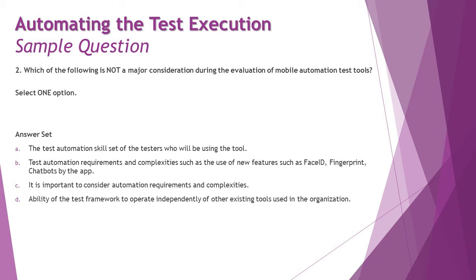Option B: the test automation requirements and complexities, such as use of new features like face ID, fingerprint, or chatbot by the app. Yes, the tool you're using should support these unique device and app features. Option C: automation requirements and complexity matter because automation doesn't always reduce time and effort simply — it requires effort to prepare frameworks, create scripts, maintain scripts, and determine your testing requirement, whether unit, integration, system, regression, or performance testing.